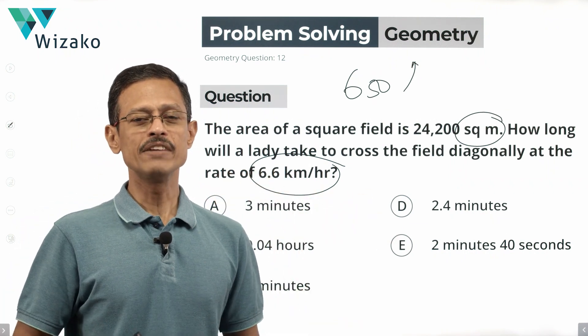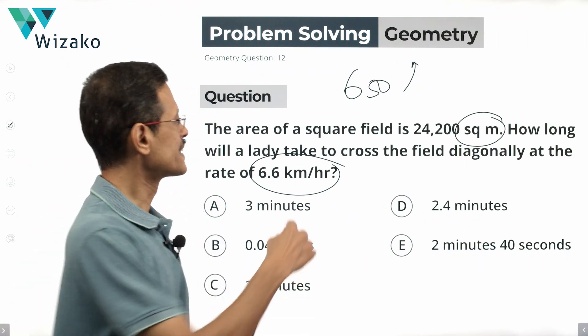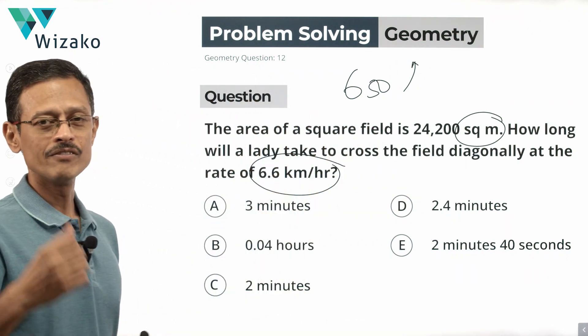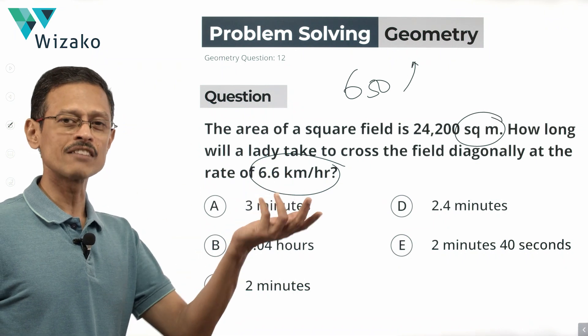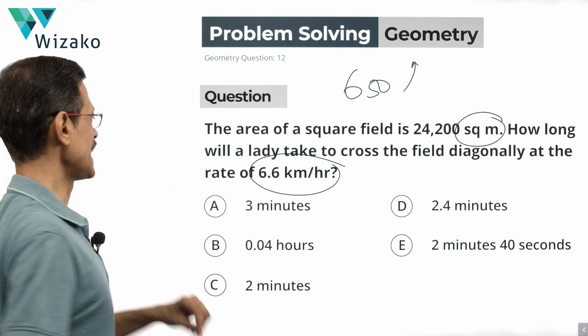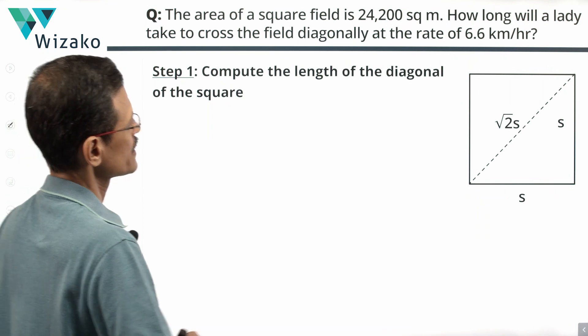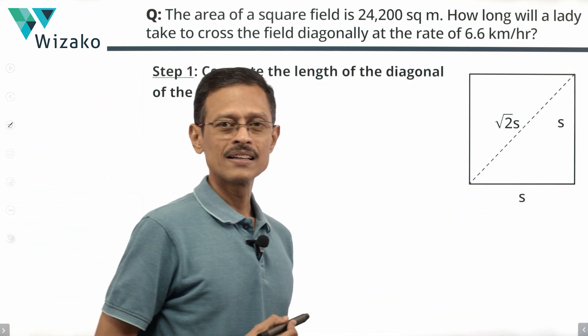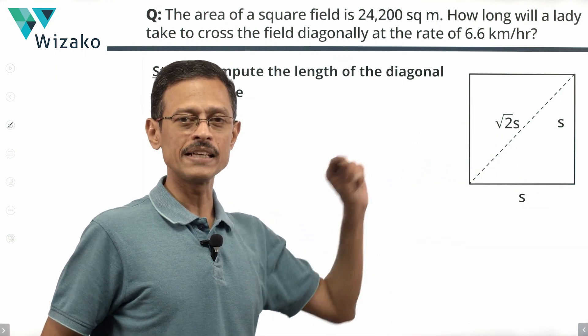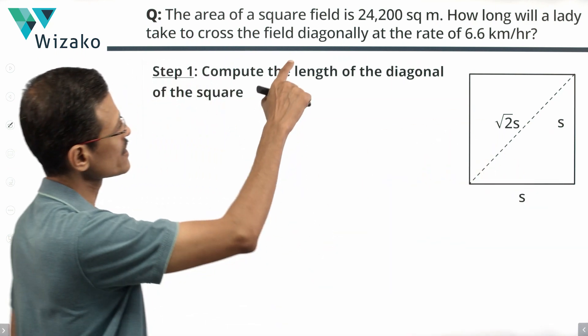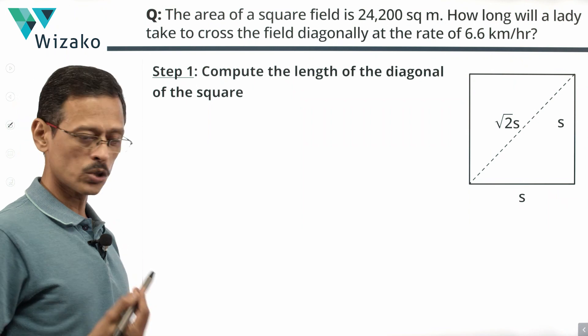Let's start one at a time. We need to start by finding out the distance that this lady is walking. We know the speed. If we know the distance, we'll be able to compute the time. Conversions of unit, we can do it later. Let's get started here. The distance that she is walking is the diagonal of the square. I'm going to assign one variable. Let the side of the square be equal to s units.